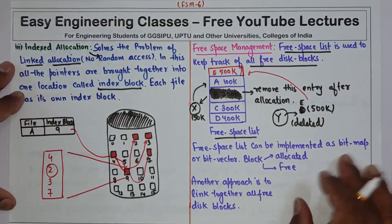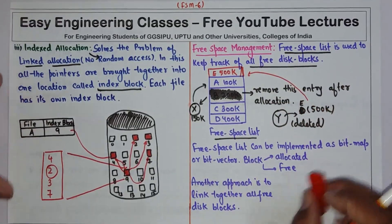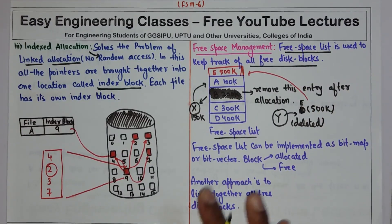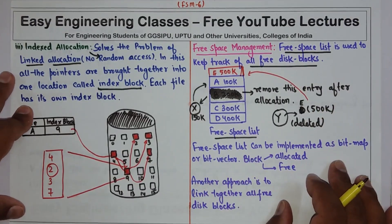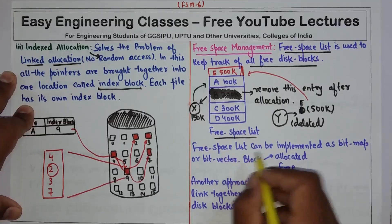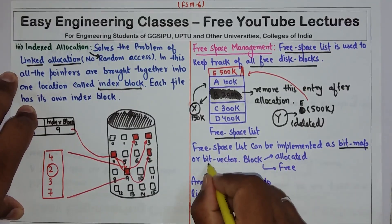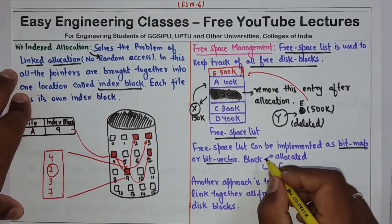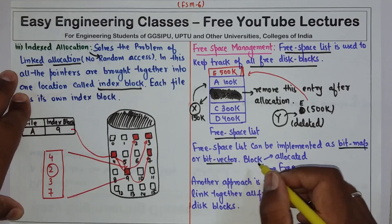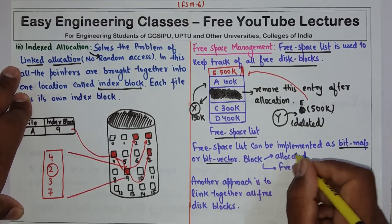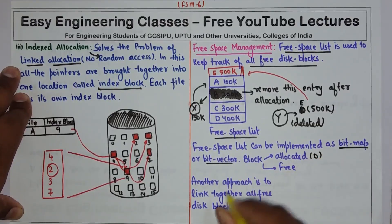Now free space list can be implemented in two different ways. One is to implement using bitmap or bit vector. In this, a single bit is used for representing the state of the block. So if the block is allocated, then the bit is zero, and if the block is free, then the bit is one.